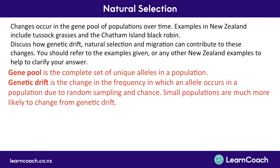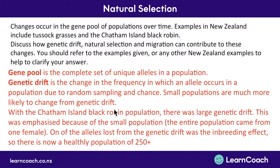For genetic drift: remember that small populations are much more likely to change from genetic drift. With the Chatham Island black robin there was likely large genetic drift because of the small population — the entire population came from one female. So whatever alleles she was randomly expressing were the ones passed on to the entire population. One of these alleles was lost from genetic drift — the inbreeding effects — resulting in a healthy population of more than 250 despite being bred from a very small sample.